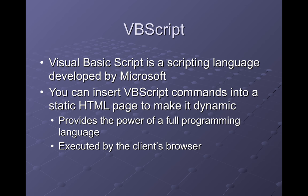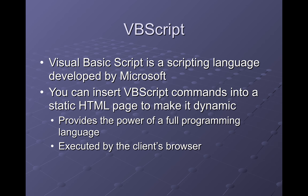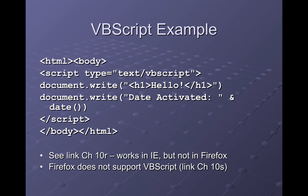VBScript was Microsoft's attempt to get into this game by writing their own scripting language based on Visual Basic, executed by the browser. You give the script tag the type 'text/VBScript' and the stuff inside should be written in Visual Basic script — which works in Internet Explorer but not in open source browsers, because the open source community never found reason to embrace VBScript. JavaScript is pretty much established as the standard, and Microsoft's VBScript never made it past runner-up status — sort of like their attempt to take over the cell phone market, where everybody uses Android or Apple.